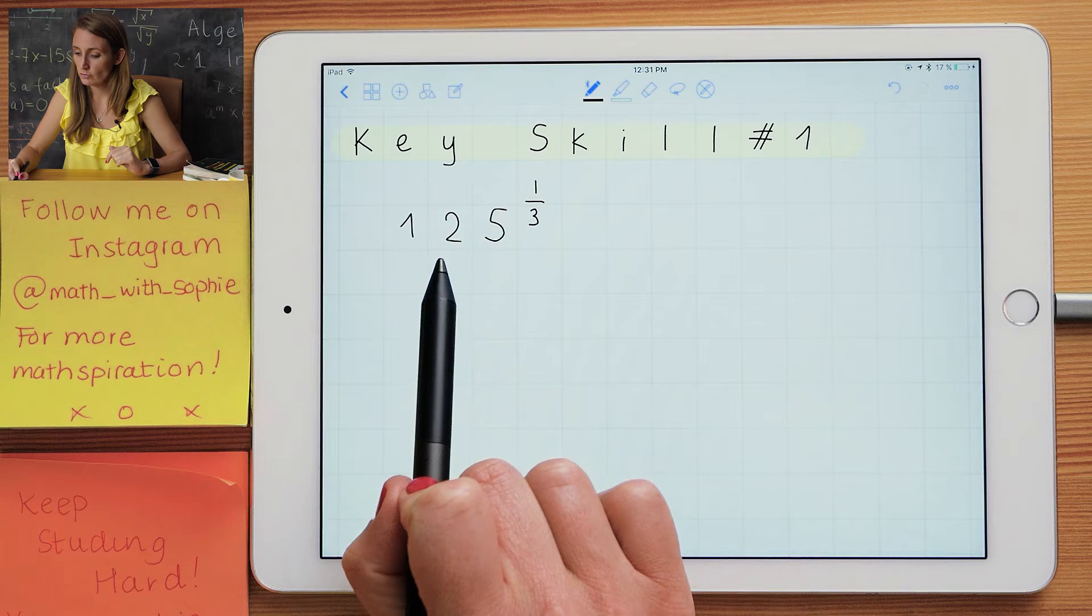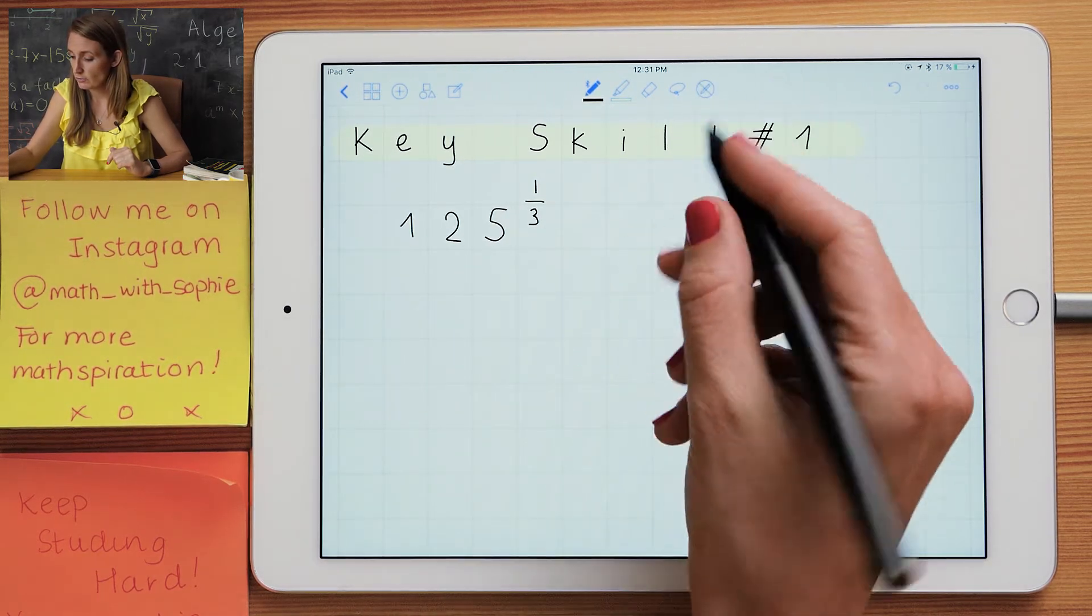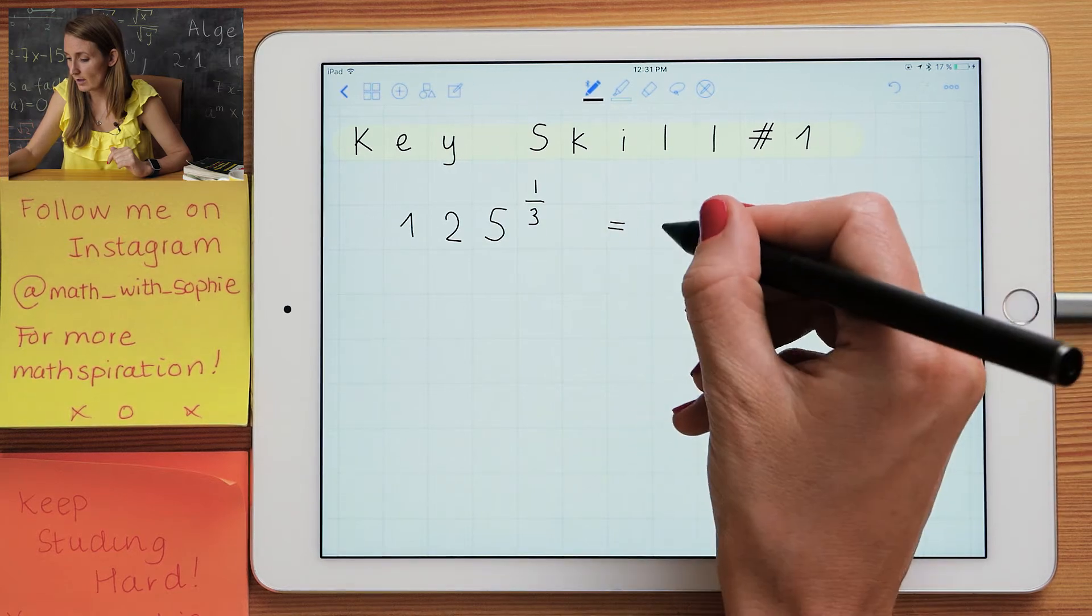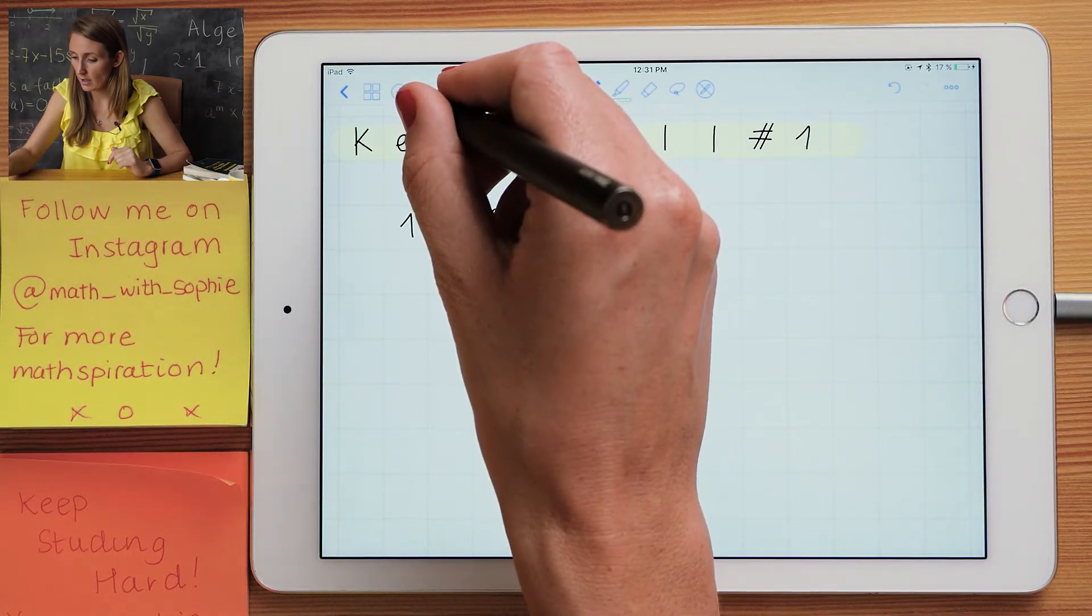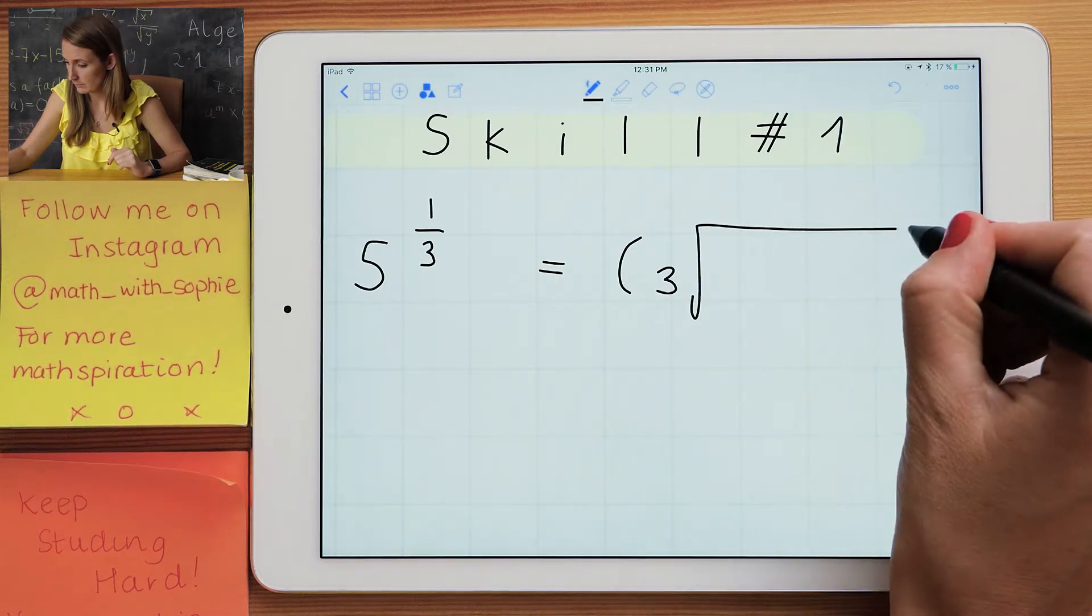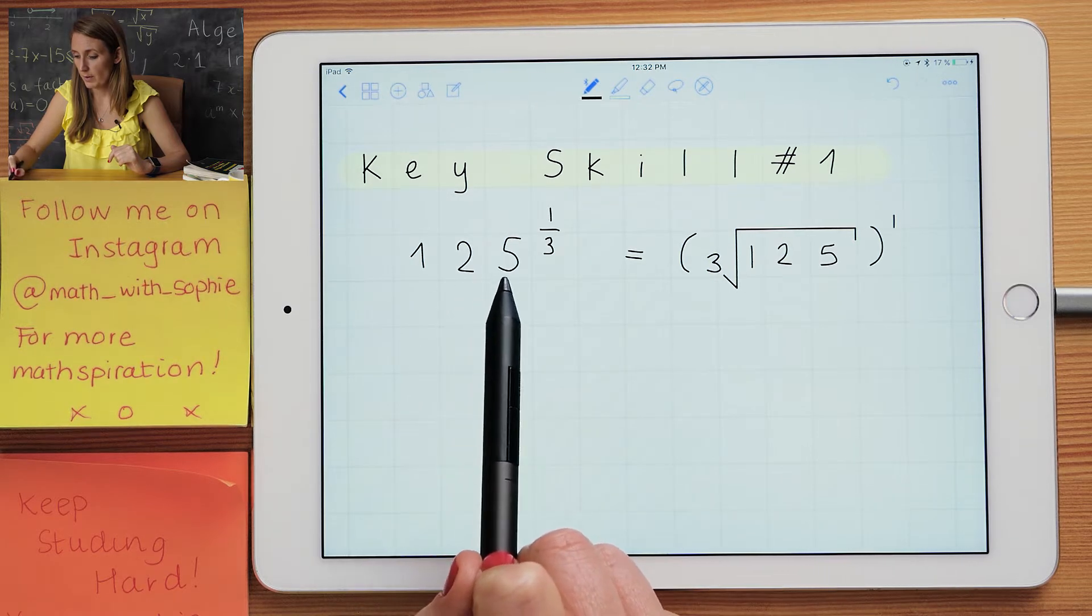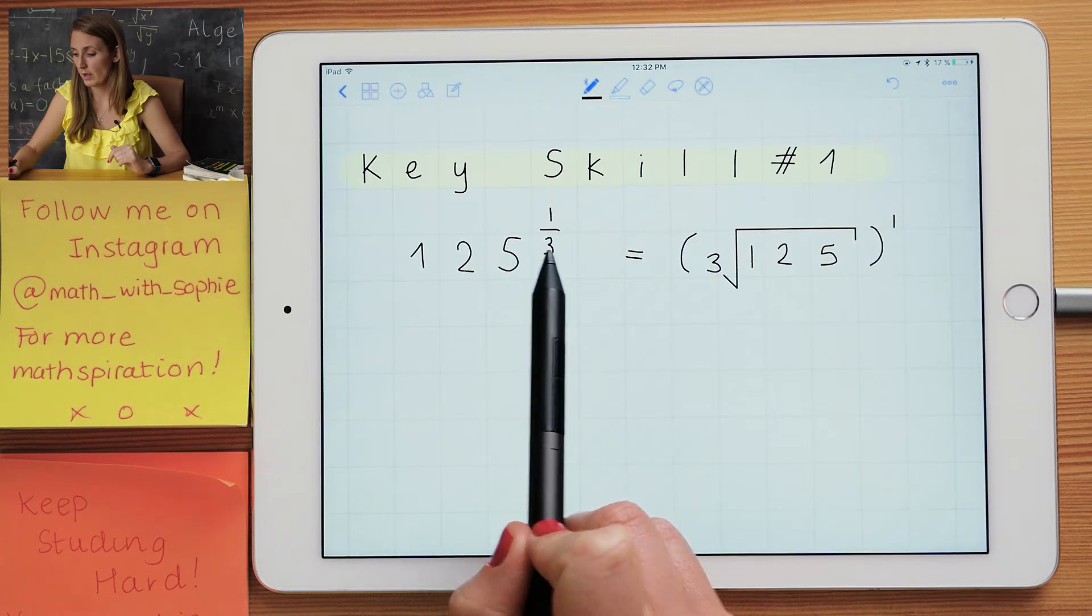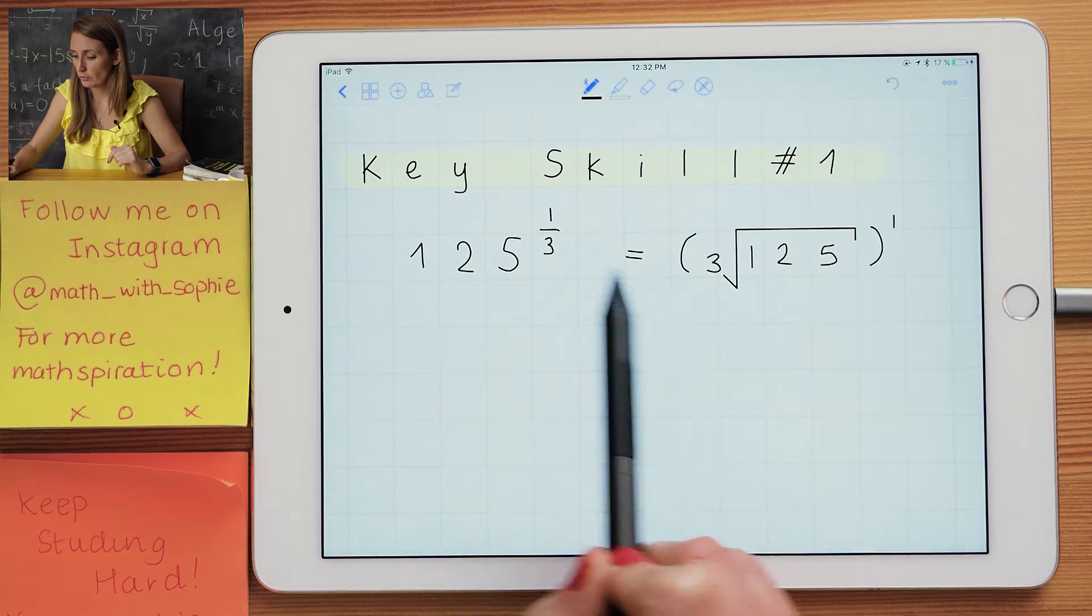So if I've got 125 to the power of a third, the first thing I'm going to do is put a bracket. Inside my brackets, I'm going to have the root. So I've got 125 to the power of 1 over 3. I've set up a bracket. Inside I've got the cube root, so that 3 is there on the root, and outside I've got the power of 1.